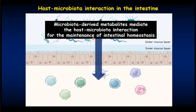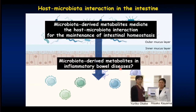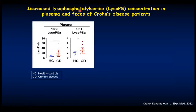Our interest is the pathogenesis of inflammatory bowel diseases. We wondered if microbiota-derived metabolites are also involved in the pathogenesis of IBD. Hisako and Yuriko addressed these issues and first performed lipidomic analysis of patients with inflammatory bowel diseases, particularly Crohn's disease. They found lysophosphatidylcholine. The concentration of lysophosphatidylcholine was increased in the plasma of Crohn's disease patients. Depending on the saturation status, there are at least two types of lysophosphatidylcholine, and the concentration of both types was increased in patient plasma.